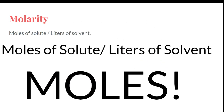So we have moles of solute divided by liters of solvent. If we want to figure out how many moles of solute we need to add to something, all we have to do is get moles by itself. Since we're dividing by liters of solvent, we just multiply by the correct amount of liters in order to cancel the liters out. That's the main way that we do molarity calculations — we get rid of the liters and then we have moles.